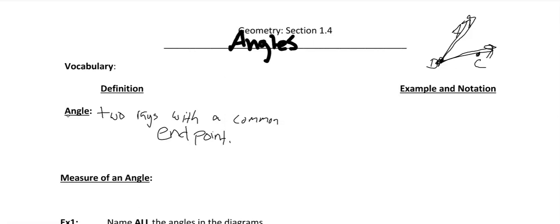So we're talking about an angle as two rays with a common endpoint. Let's say we had points A, B, and C. One way to name this angle would be to write the word angle and then take one point on one ray. This thing right here is called the vertex. Then you take another point on the other ray. So on one side we have A, then the vertex B, then C. So one possible way is calling it angle ABC.